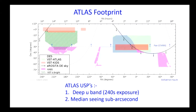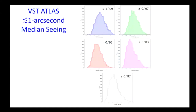The unique selling points of ATLAS: not only is the median seeing sub-arcsecond, but we have deep u-band with something like 240-second exposures compared to 60 seconds for SDSS. The u-band median seeing is 1.09 arcseconds; g-band sub-arcsecond at 0.97; r-band 0.95; i-band 0.83; and z set up a little at 0.87. So it's sub-arcsecond median despite being a filler survey — I think that's good.